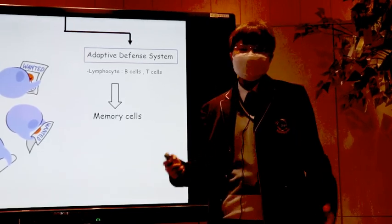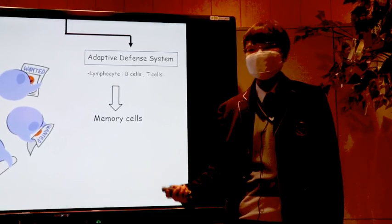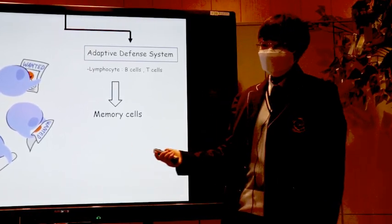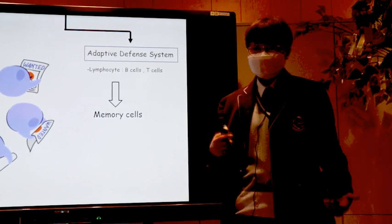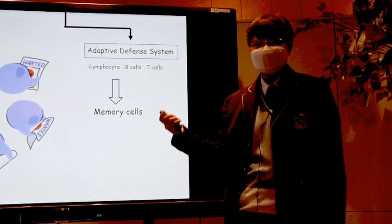T cells do not have such a mechanism, but both B cells and T cells can make memory cells. The memory cell increases the immune response rate, strength, and duration upon exposure to the same antigen.